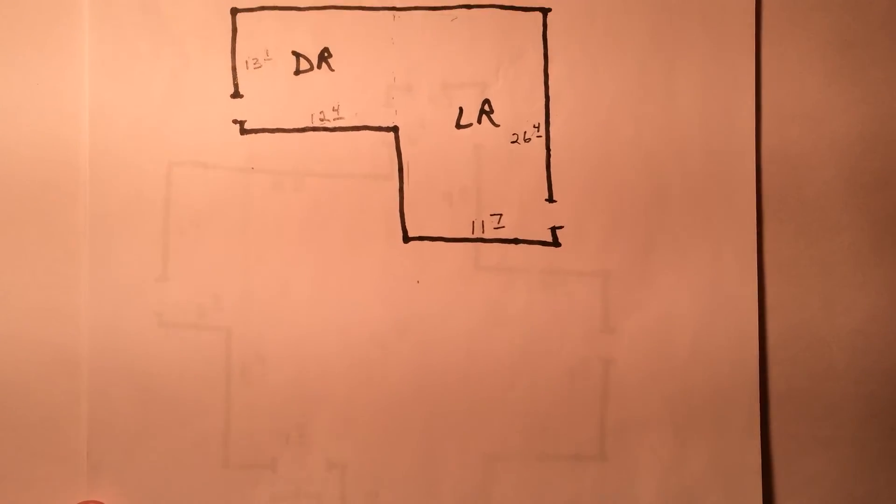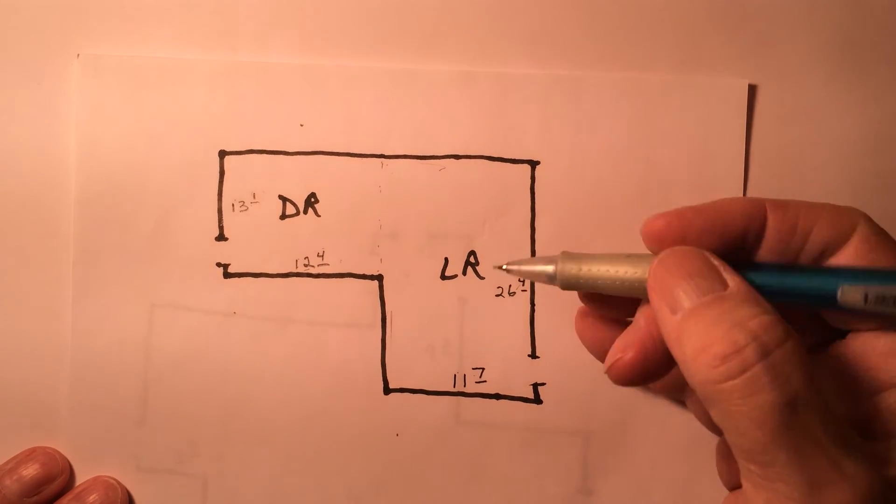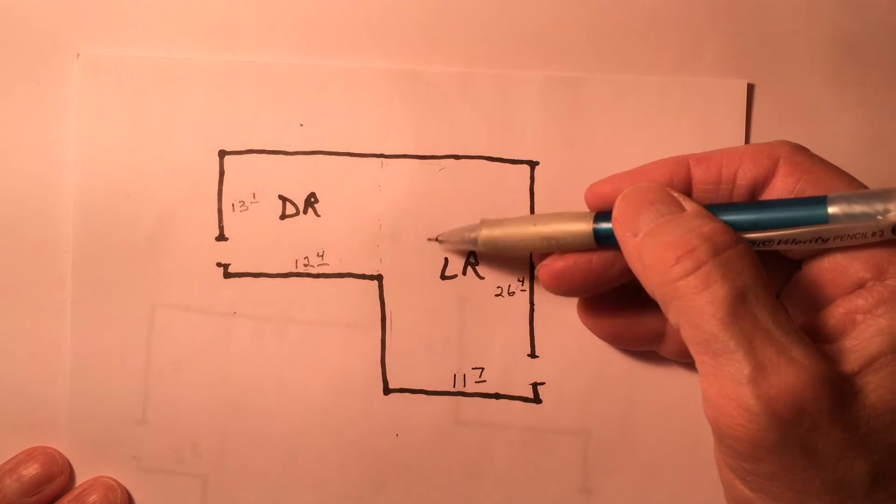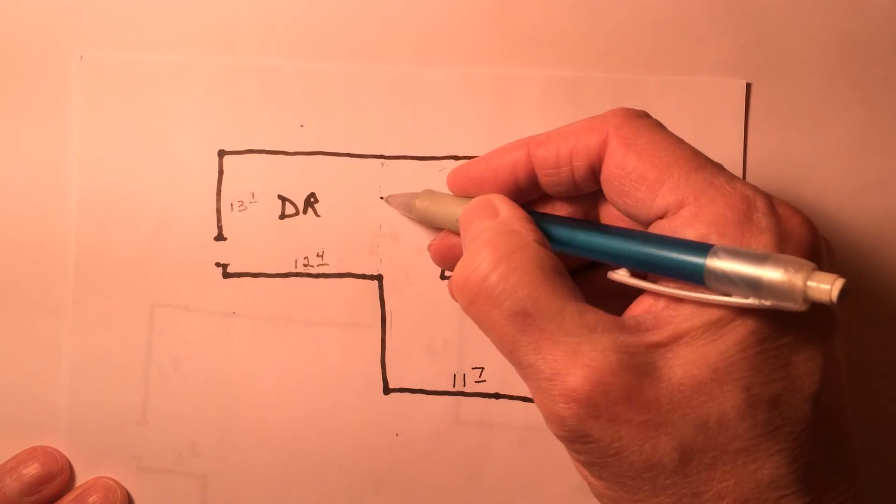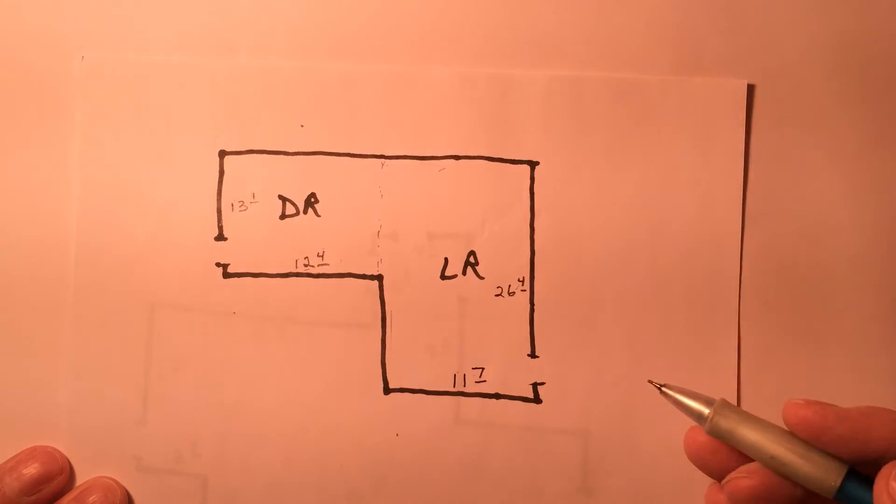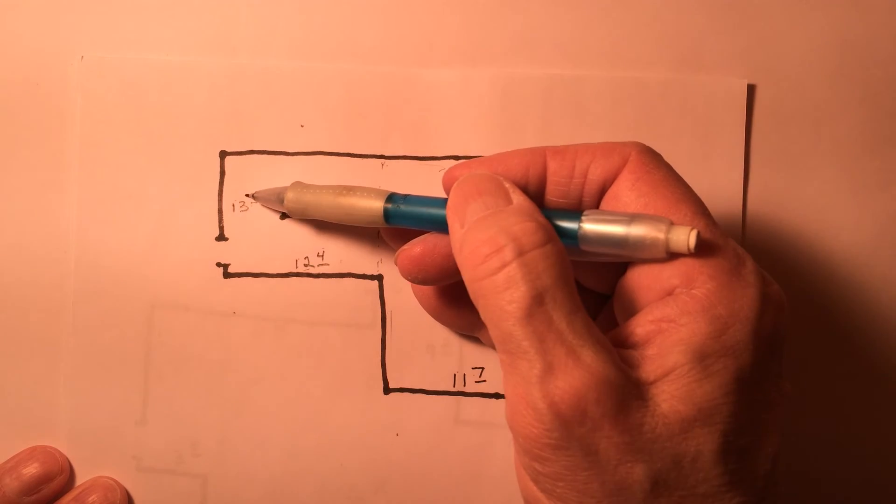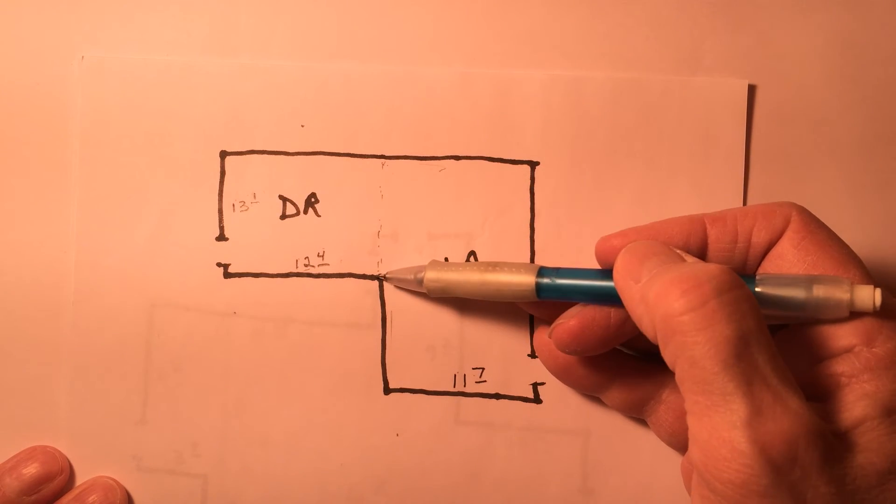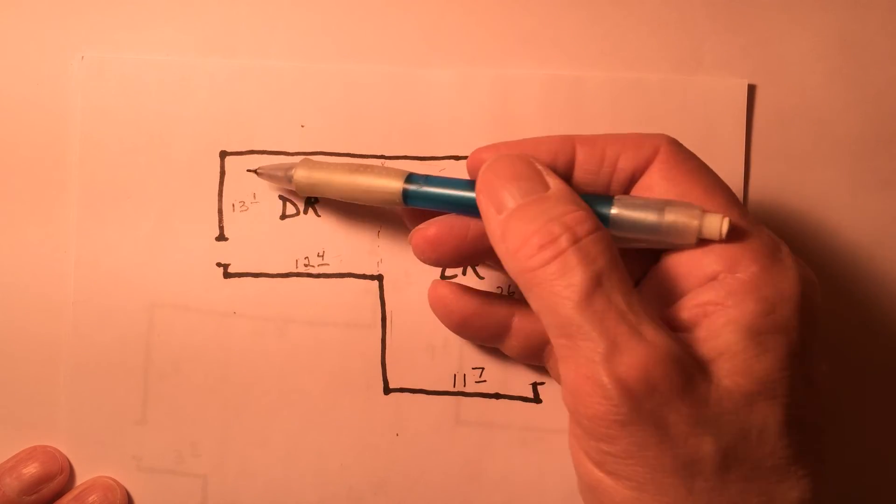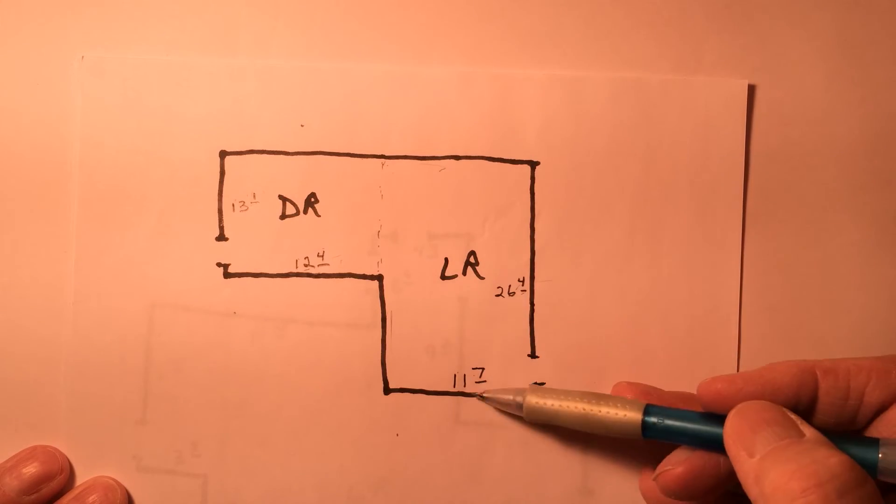On an L-shaped room, we want you to look at it as two rectangles. This living room is its own. Here's the dividing line. And this rectangle, the dining room, has two measurements. The living room has two measurements.